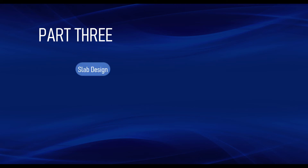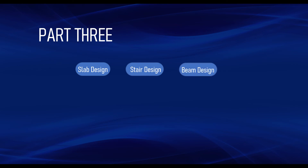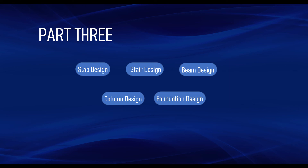Then we move to Part 3, which is also practical and covers design. From the structural layout we already know our slabs, beams, and columns. In Part 3 we design the slab, the staircase, the beam, the column, and the foundation. The type of foundation to be used will depend on the soil condition that we have.